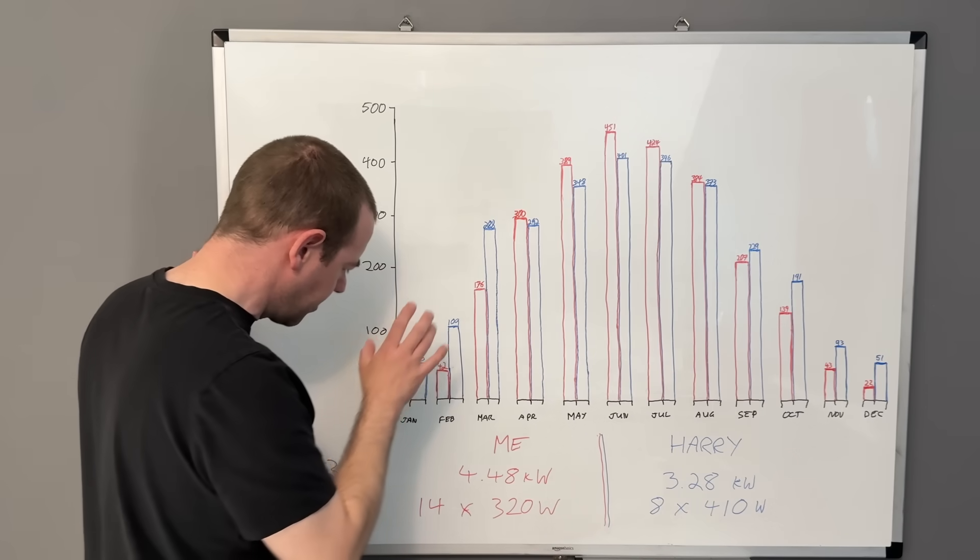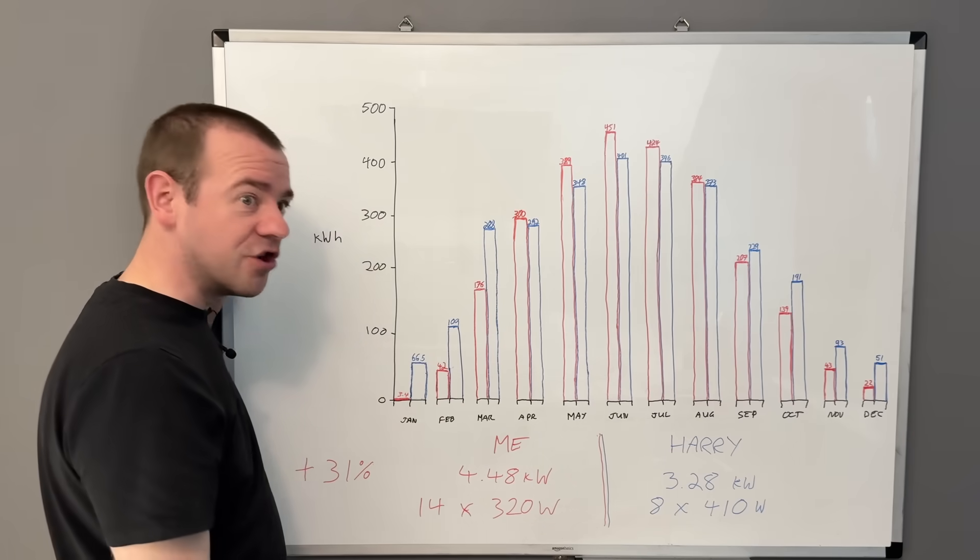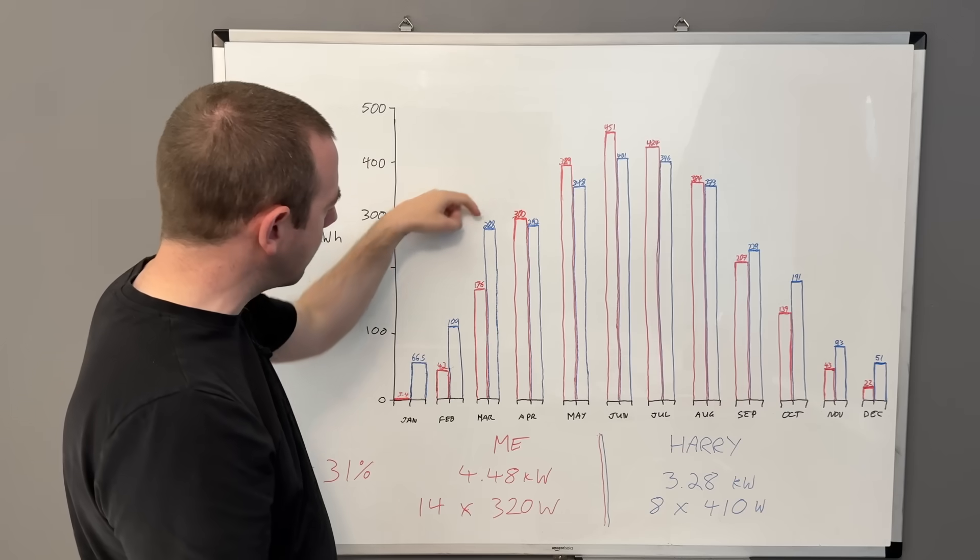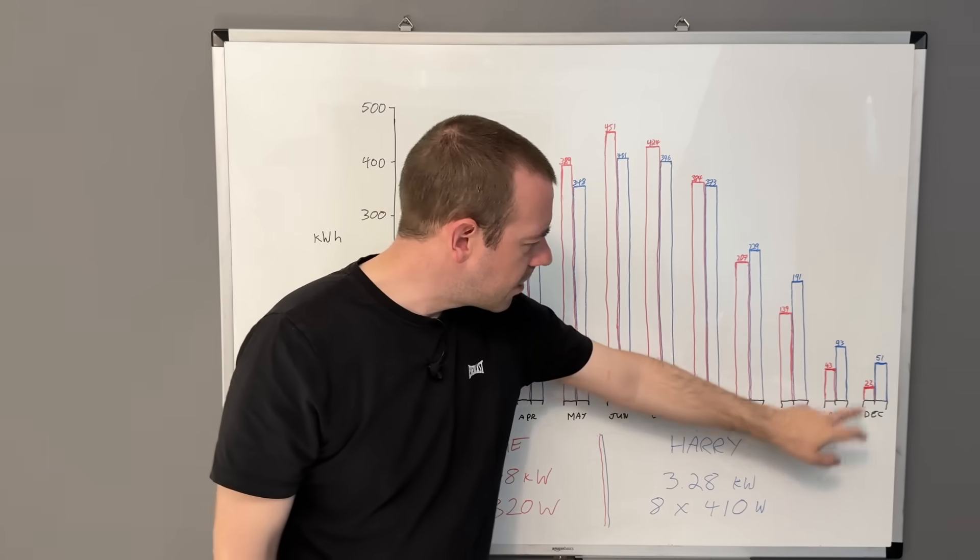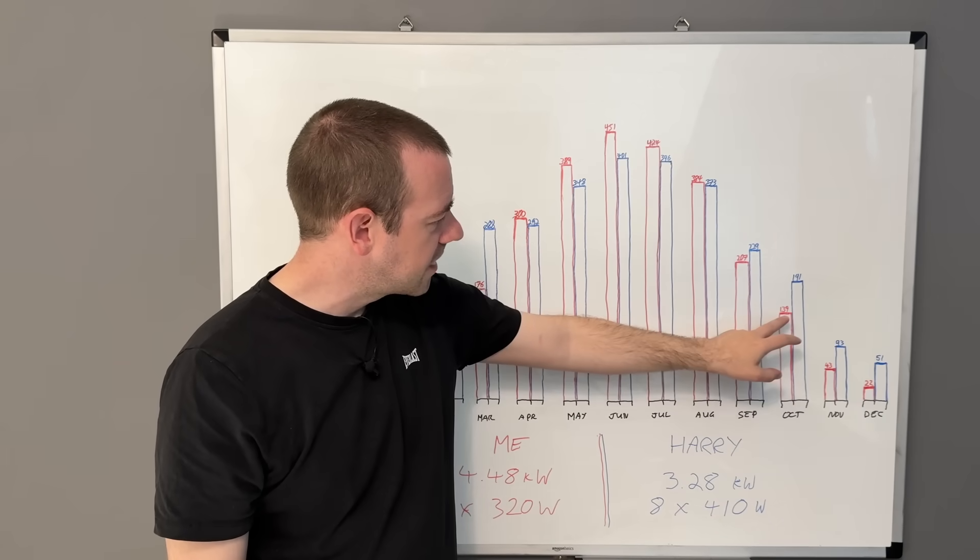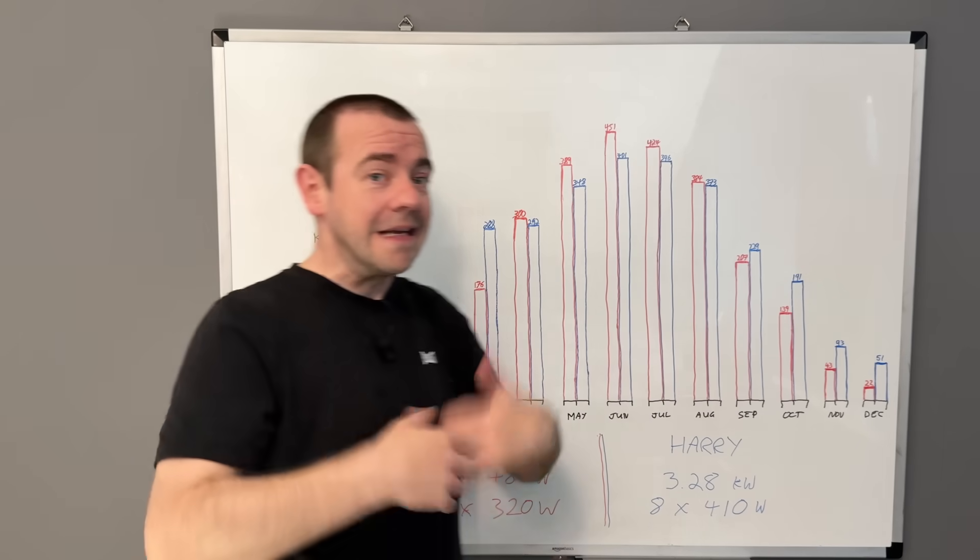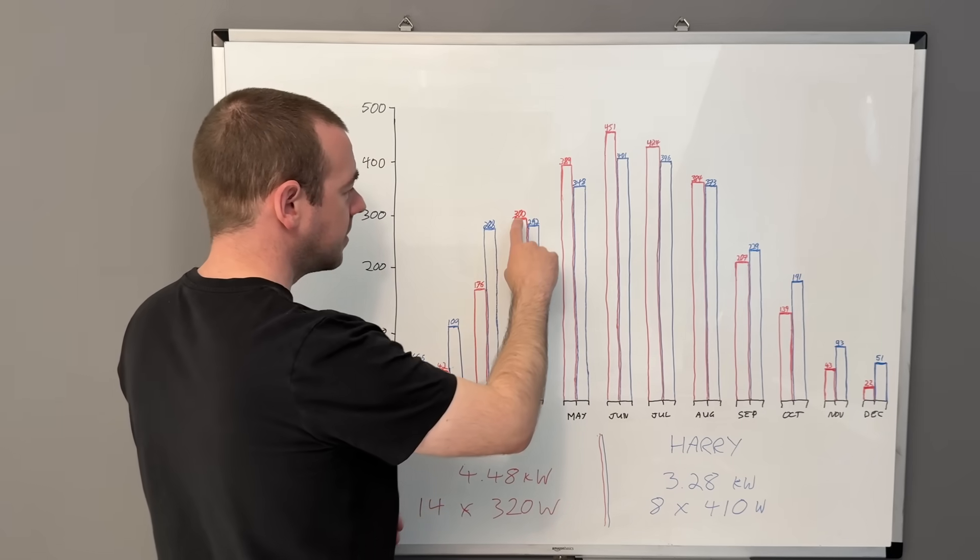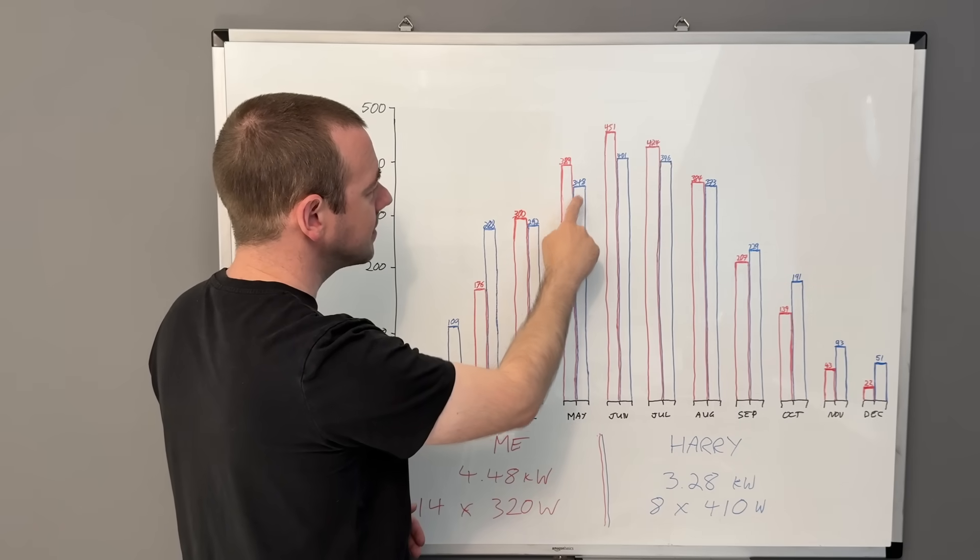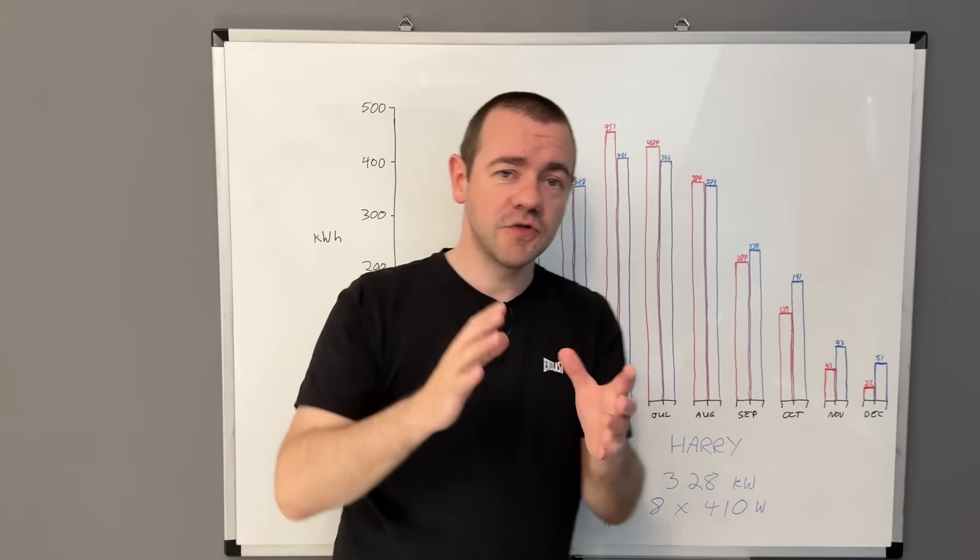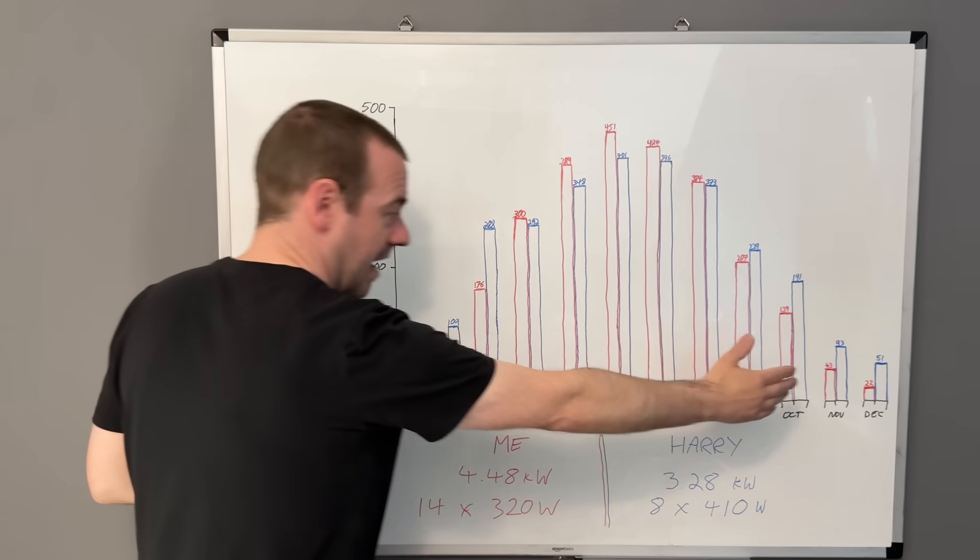January, I generated just 3.4 kilowatt hours which is awful. He got 66.5. February, I got 42, he got 109. March, I got 176, he got 288. December, I got 22, he got 51. November, I got 43, he got 93. October, 139 for me, 391 for him. Even September he got slightly more than I did. Only in the summer months where I can hit my peak did I generate more than him, but not by a lot.